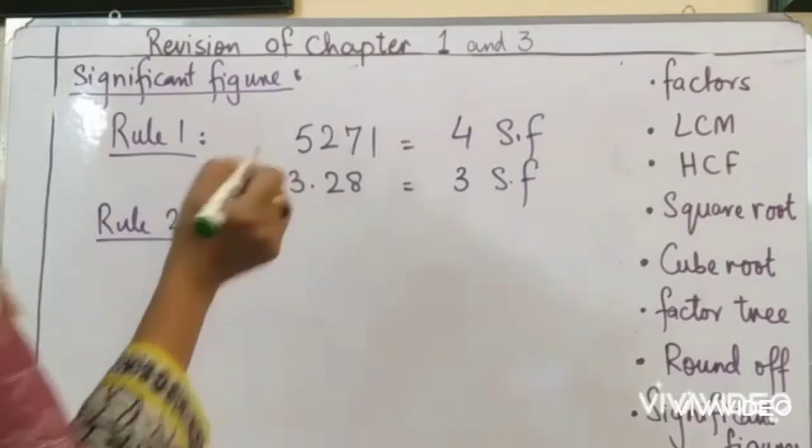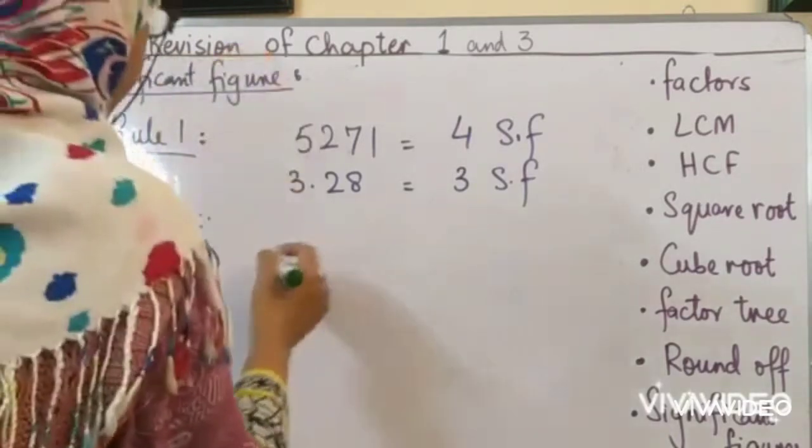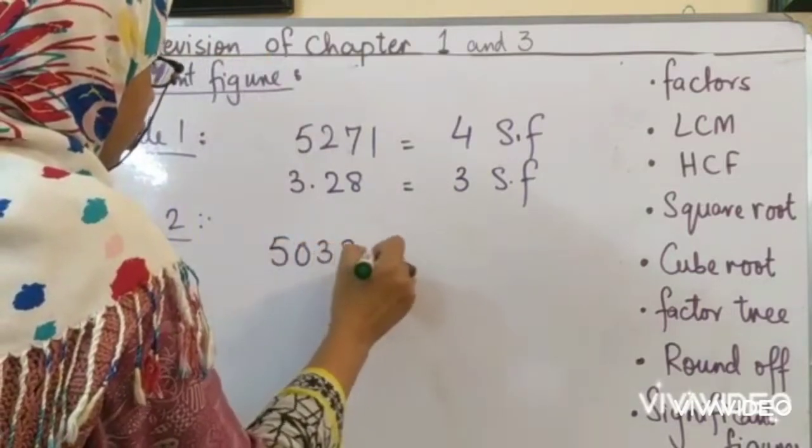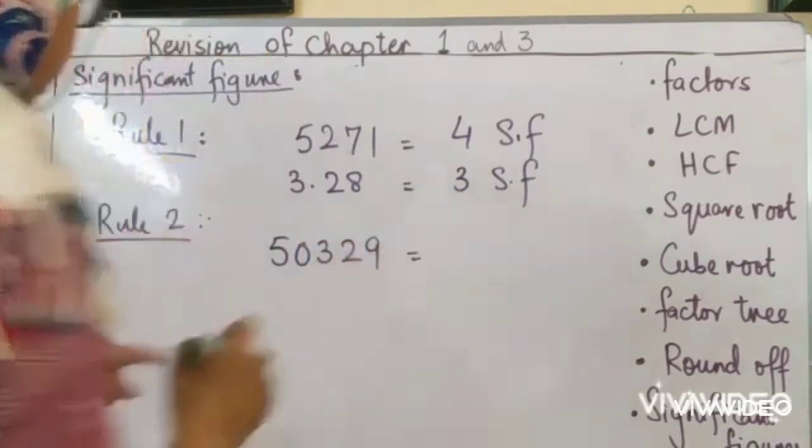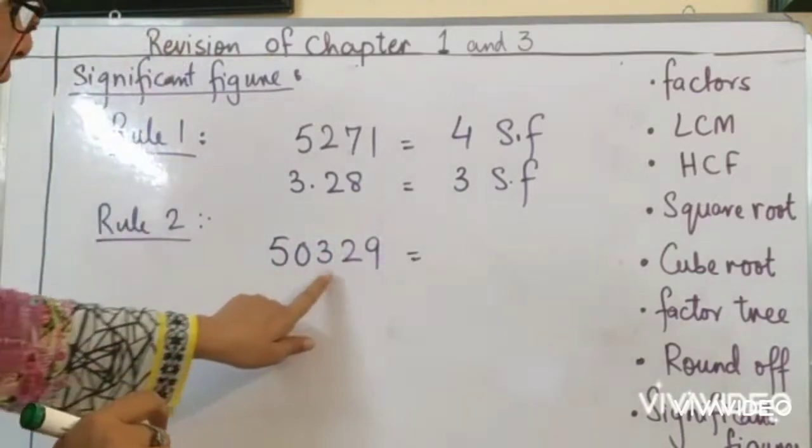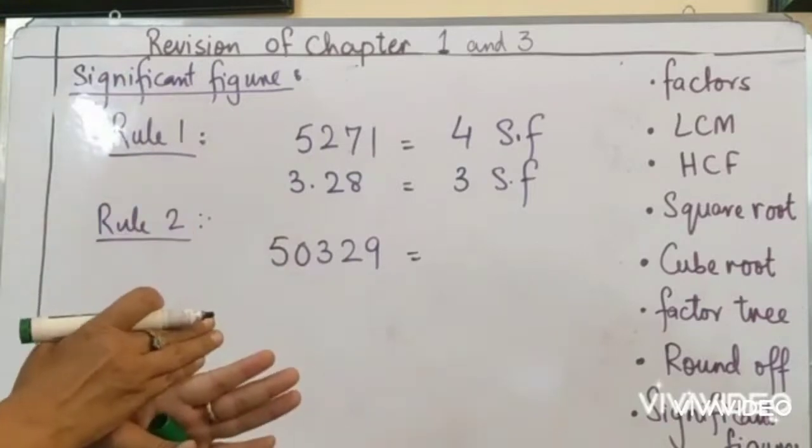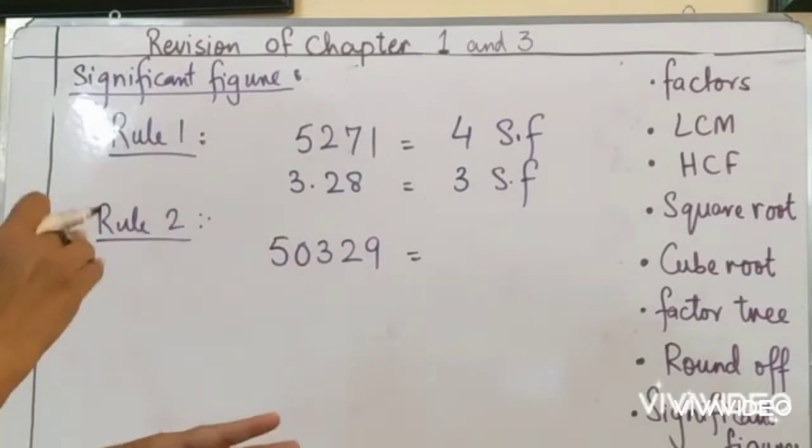Look at rule number 2 from the book. All zeros between non-zero digits are significant. Let's see an example. 5, 0, 3, 2, 9. Zero is in the center of two non-zero digits. So that zero also becomes a significant number.